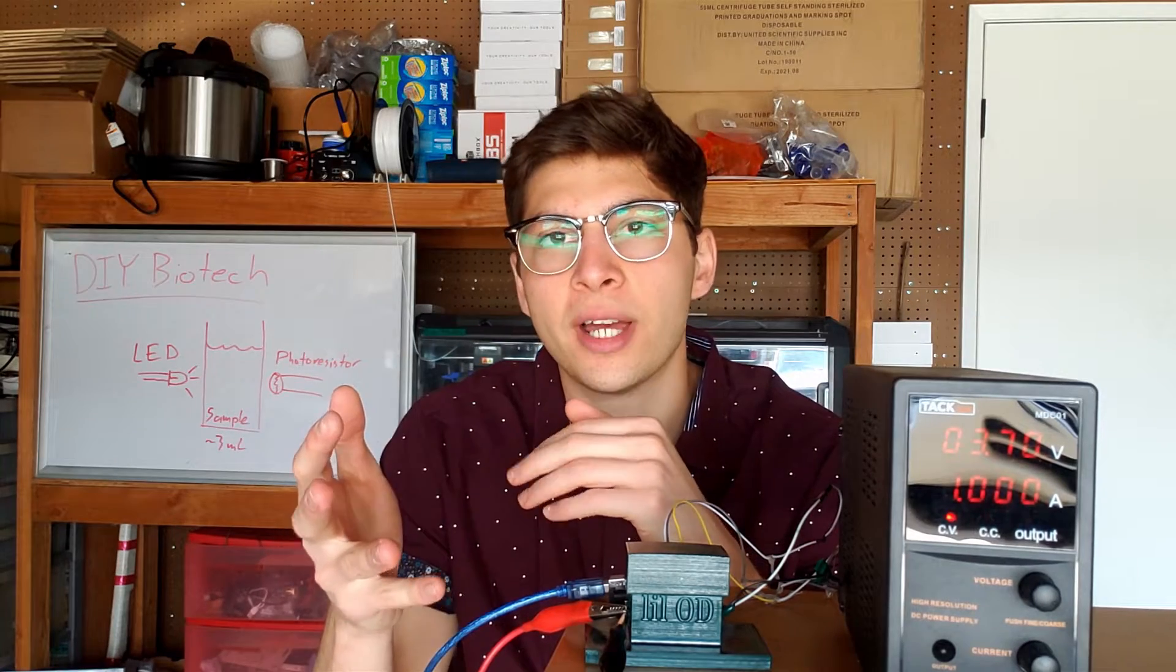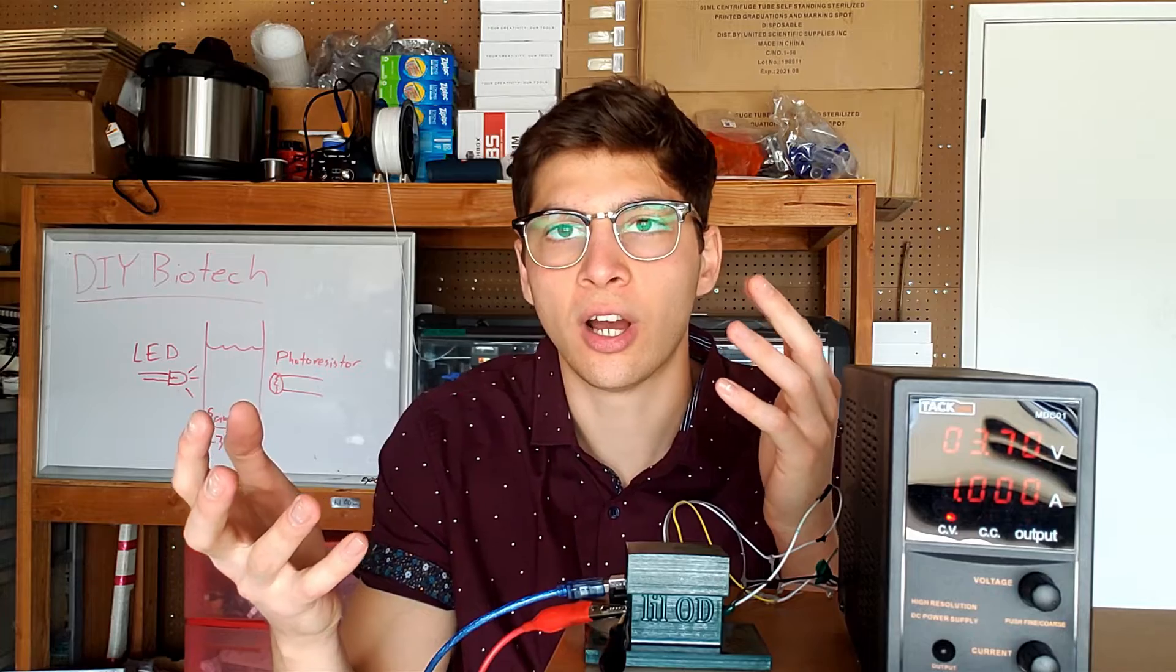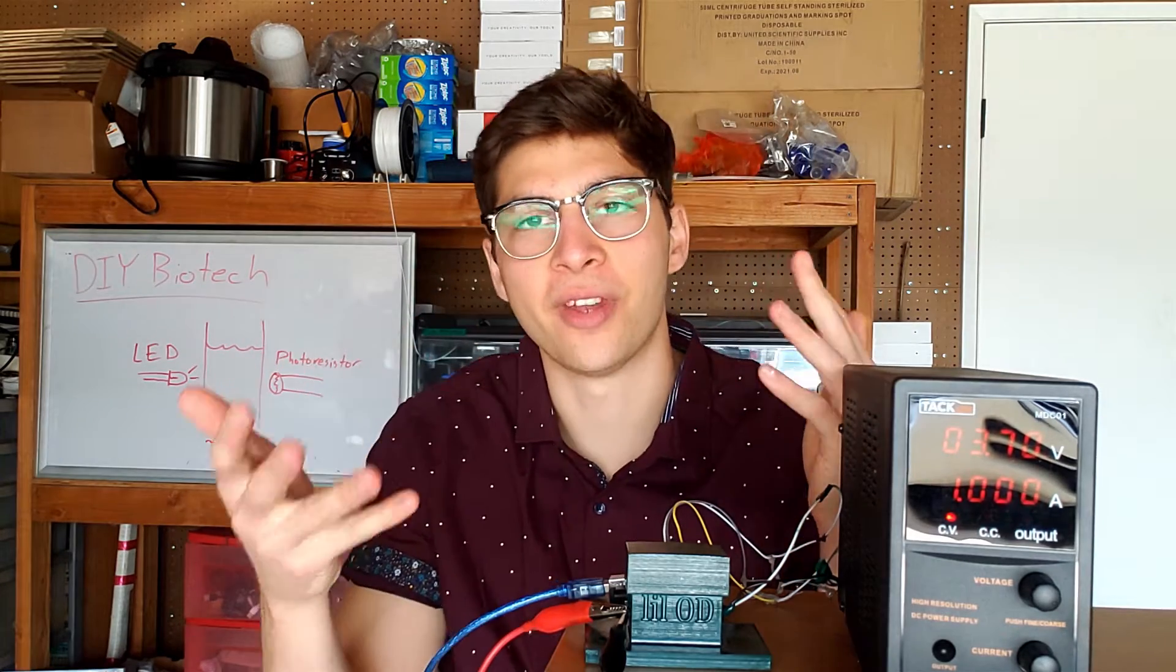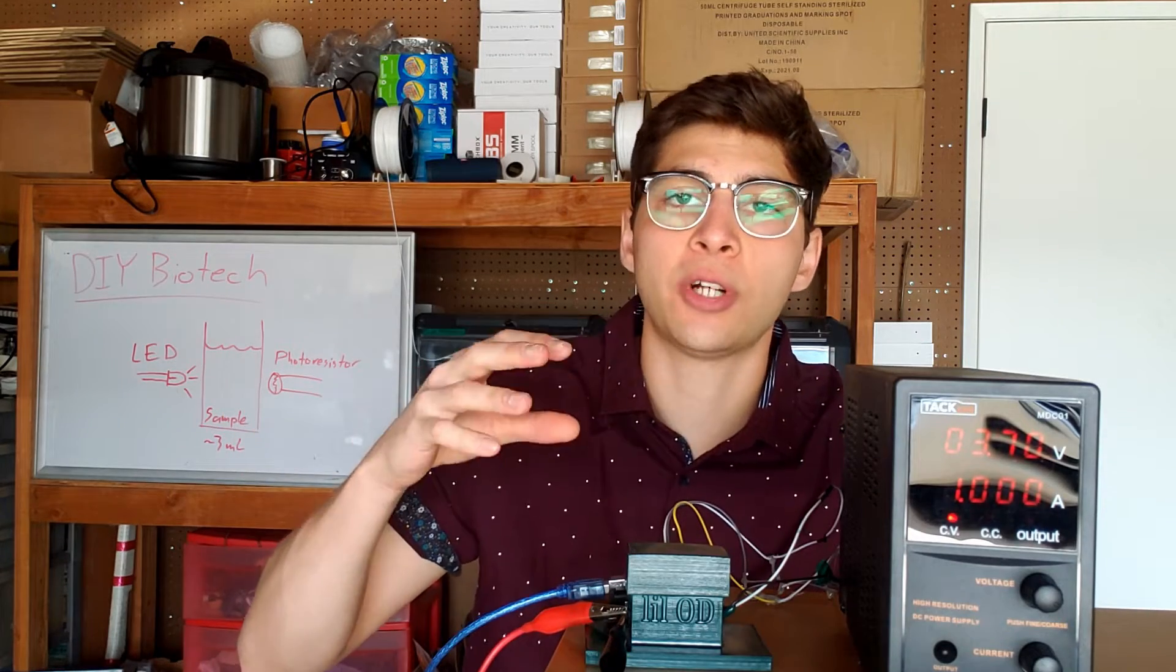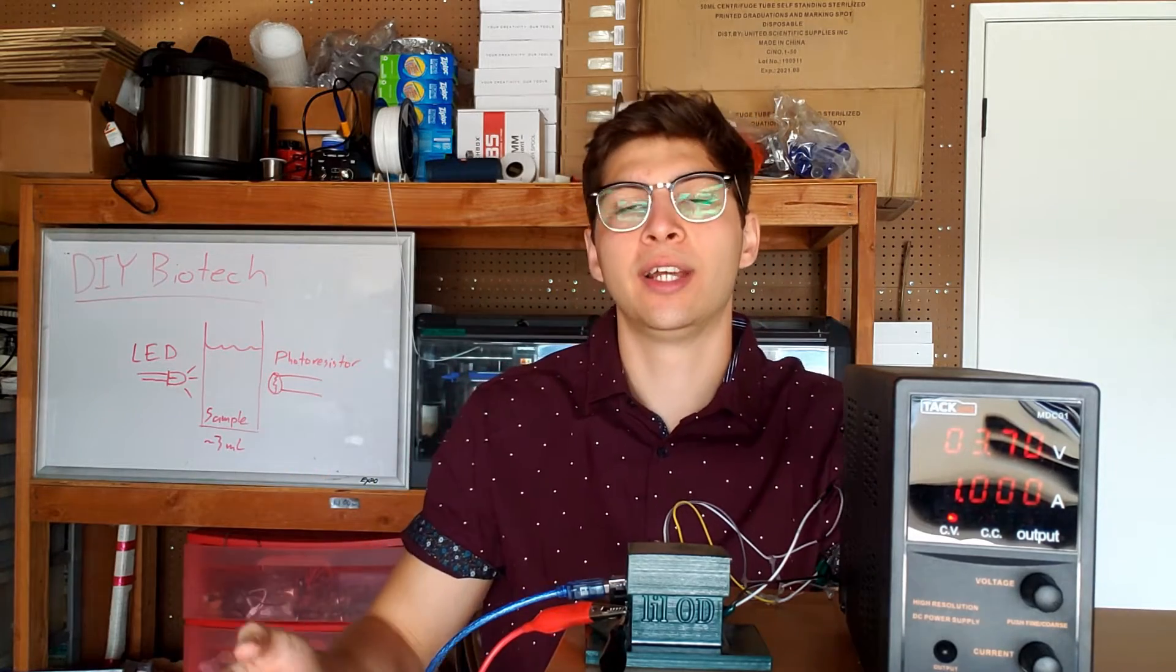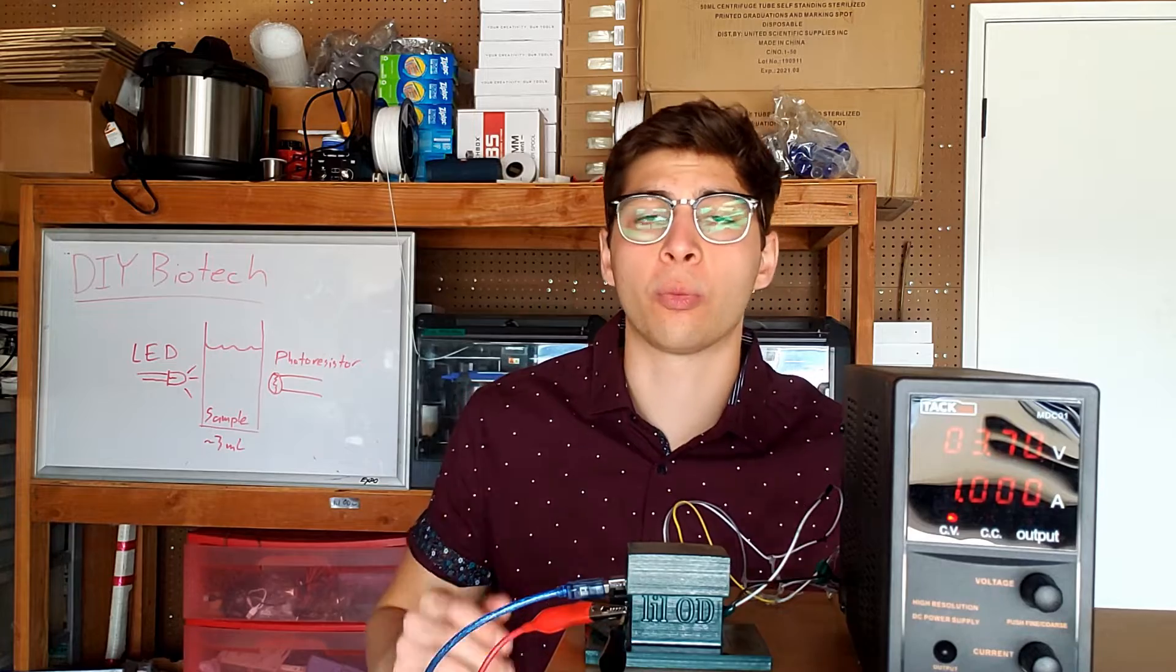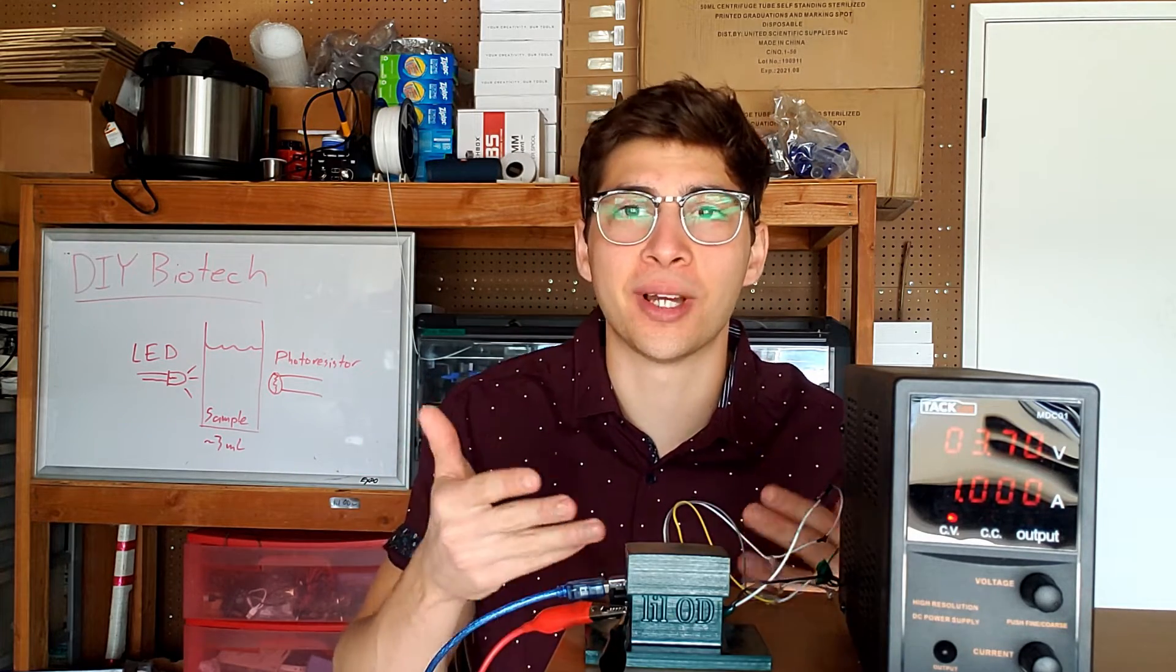So since we're trying to measure how much stuff is in our solution, our baseline is going to be a solution with nothing in it. So by measuring the water cuvette and subtracting that reading from the reading with your solution, then you get sort of an absolute reading, and those absolute readings are what we want to graph, and those absolute readings are what we want to use to measure our solutions.